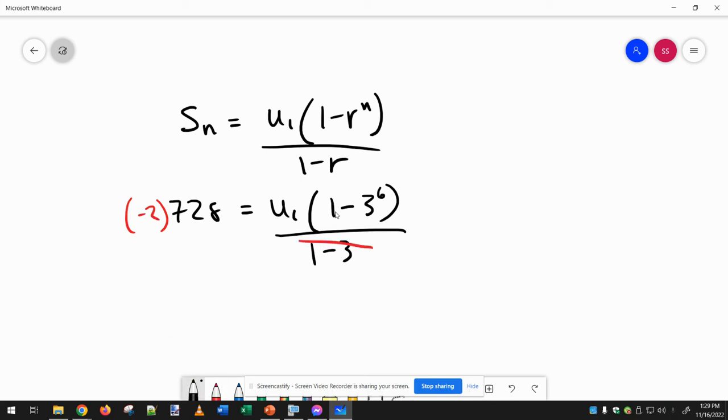So 728 times negative 2 is negative 1456, now we equal the first term times, and now we can calculate this, 1 minus 3 to the power of 6 is negative 728.